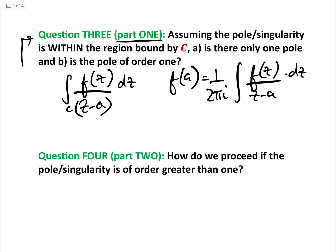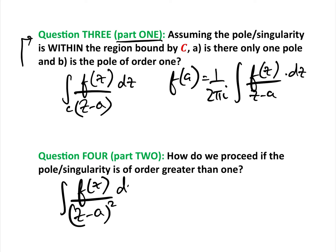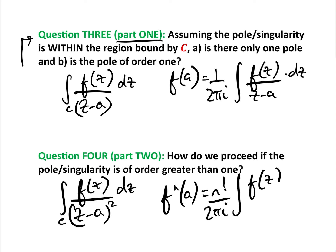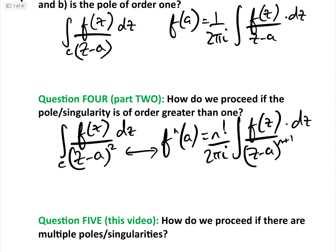In the second video we dealt with situations where the order of the pole was greater than one — for example, the integral of f(z) over (z minus a) squared around a curve C where a was within the region. We dealt with that using the Cauchy Integral Formula for derivatives: f^(n)(a) equals n! over 2πi times the integral of f(z) over (z minus a)^(n+1) dz.